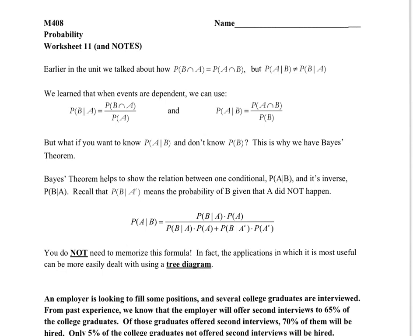If you recall earlier in the unit, we talked about how with an AND statement or an OR statement, order does not matter. So the probability of B and A is the same as the probability of A and B. We also stressed how this ability to commute the probabilities back and forth is not true for conditional probability. The probability of A given B is not the same thing as the probability of B given A — there is different given information, therefore the likelihood of the events is not the same.